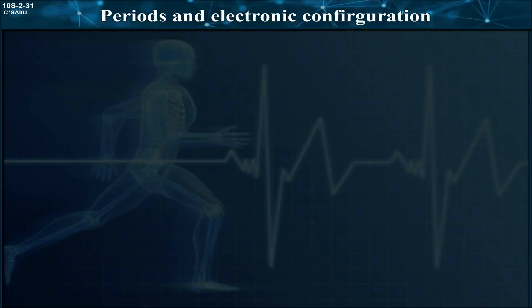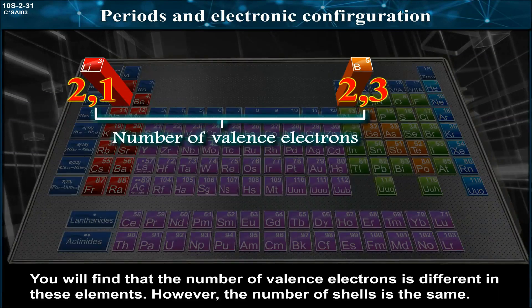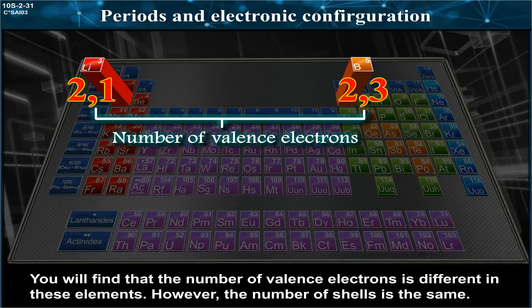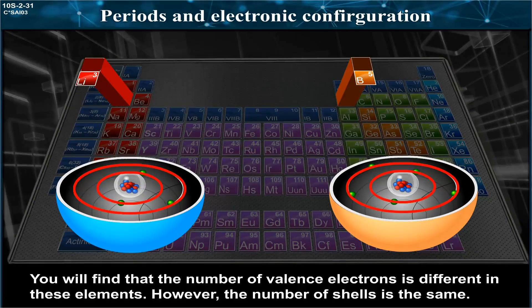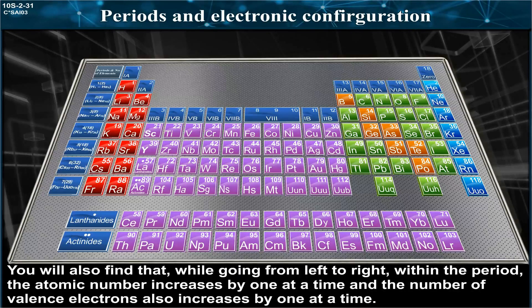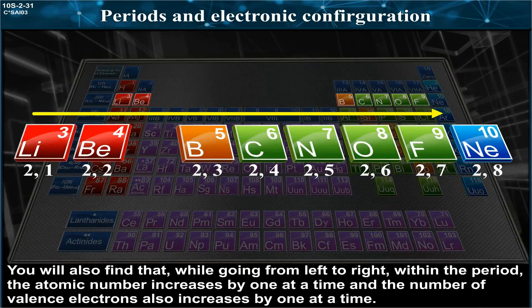Periods and electronic configuration. You will find that the number of valence electrons is different in these elements. However, the number of shells is the same. You will also find that while going from left to right within the period...